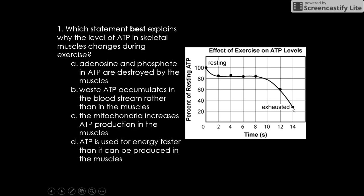So why is the ATP going down? Is it A, adding adenosine and phosphate, so the A and the P in ATP are destroyed by muscles? B, waste ATP accumulates in the bloodstream rather than in the muscles? We never have waste ATP, we never will have waste energy in the blood.